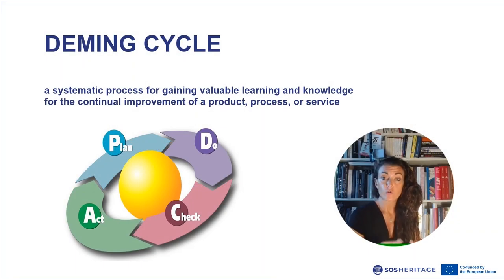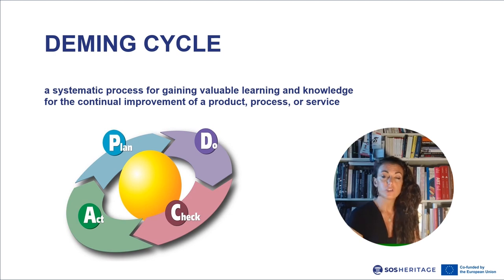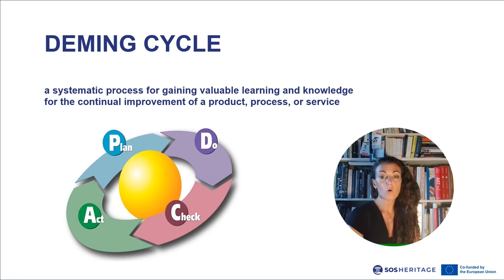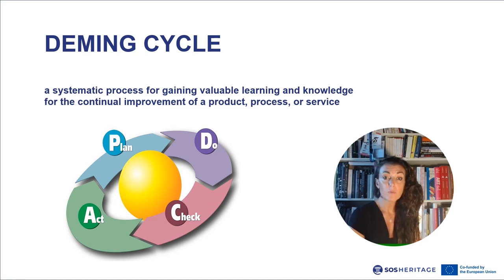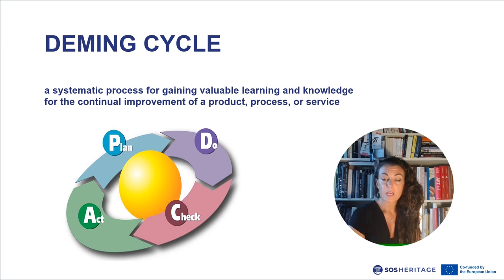Another important operational tool for any management system is the PDCA cycle, which aims at the control and continuous improvement of the organization's processes. The PDCA cycle was first introduced by Dr. Deming in 1950 and involves the sequential actions of plan, do, check, and act. It is a systematic process for gaining valuable knowledge from the continual improvement of a product, process, or service. The cycle begins with the plan step, which involves identifying a goal or purpose, formulating a theory, defining a metric, and putting a plan into action.